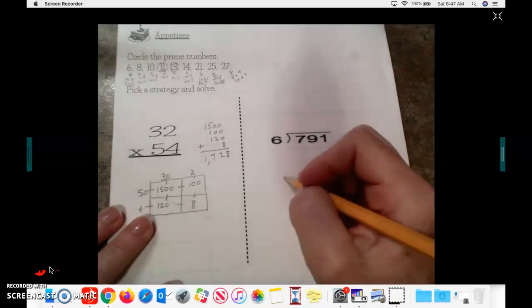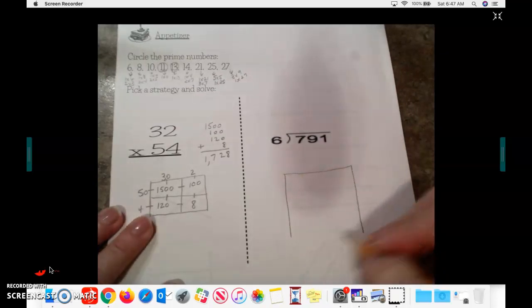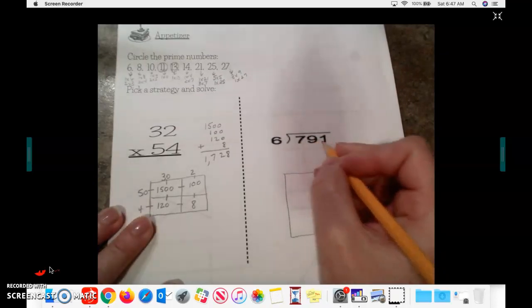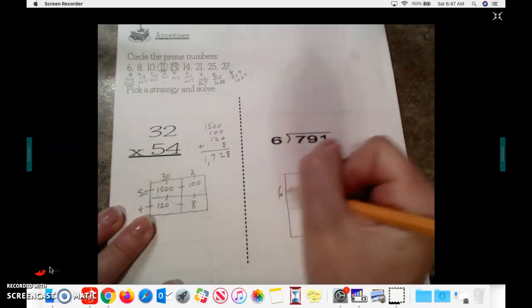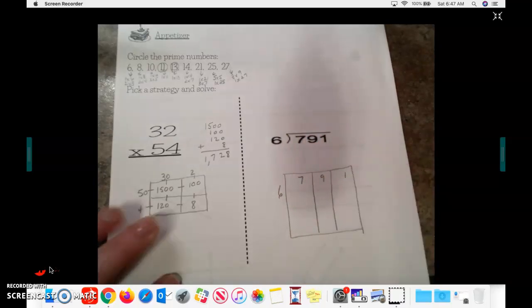Long division. Again, I'm going to use the box method. So I have a three-digit number that I'm going to need three columns. I have 6. I have 7, 9, and 1.